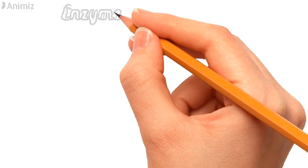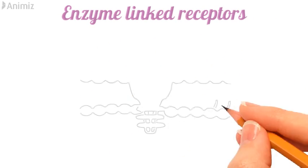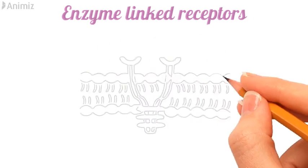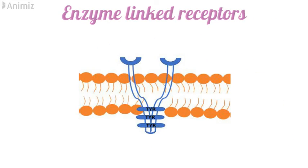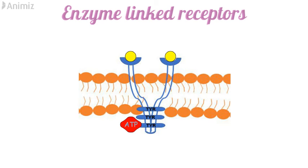Next are enzyme-linked receptors. These receptors themselves have catalytic activity or are linked to an enzyme. When a ligand binds to this receptor, it leads to autophosphorylation of the receptor, which gives the pharmacological activity, as happens in the case of the tyrosine kinase receptor.